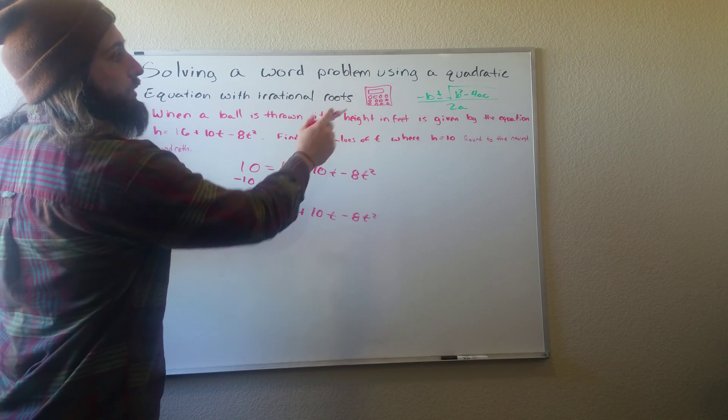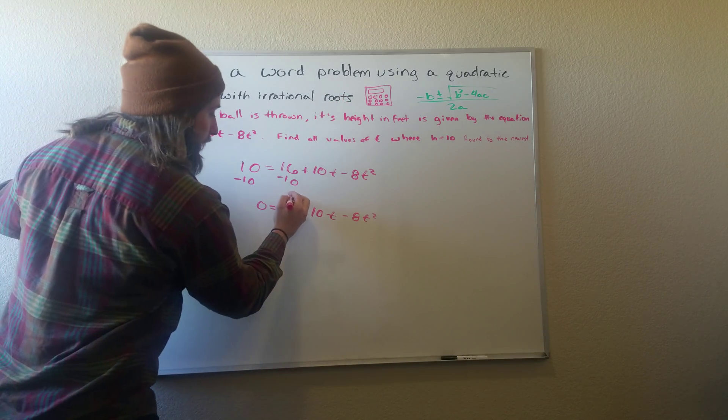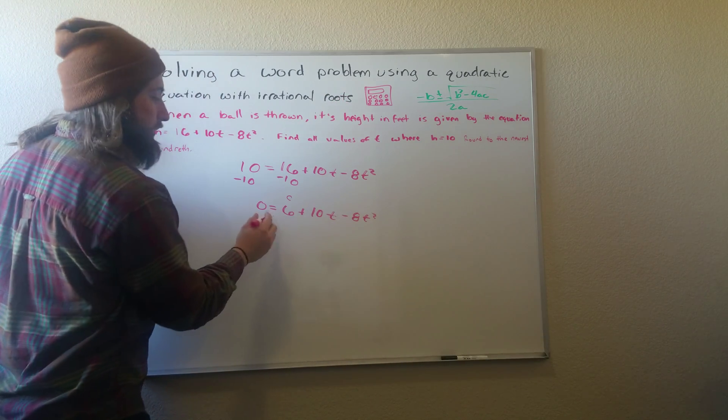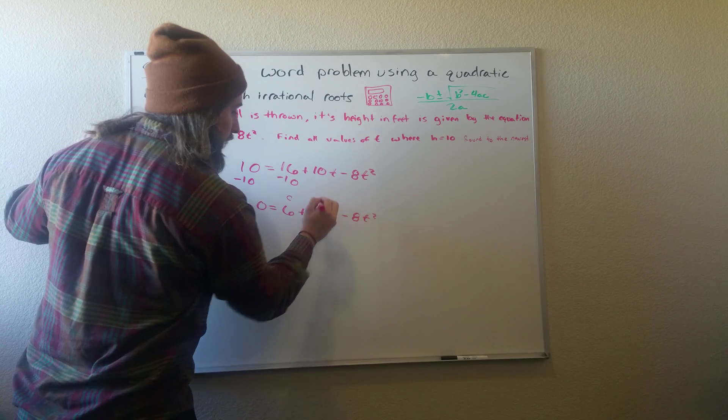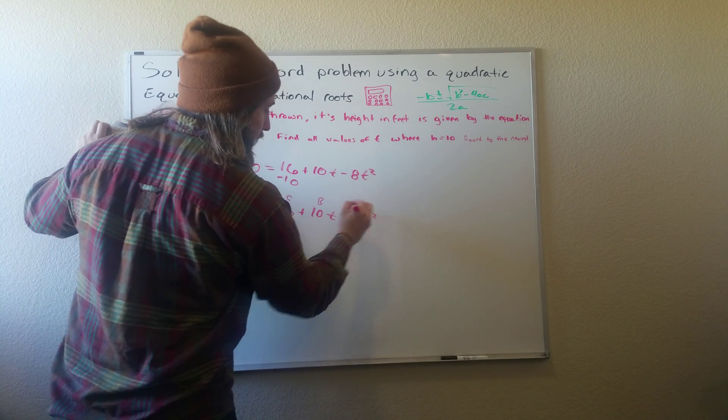Now we're going to use our equation. And just as a reminder, the 6 is C, the 10 is B, and the negative 8 is A.